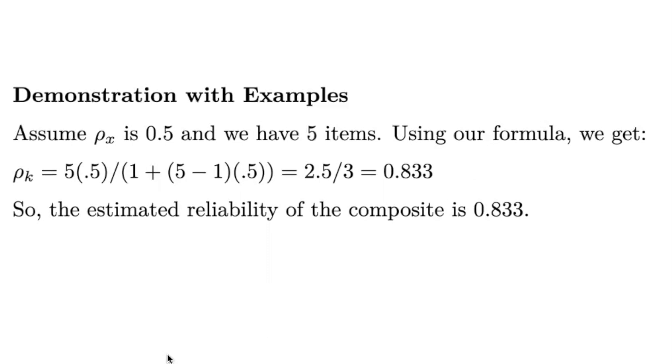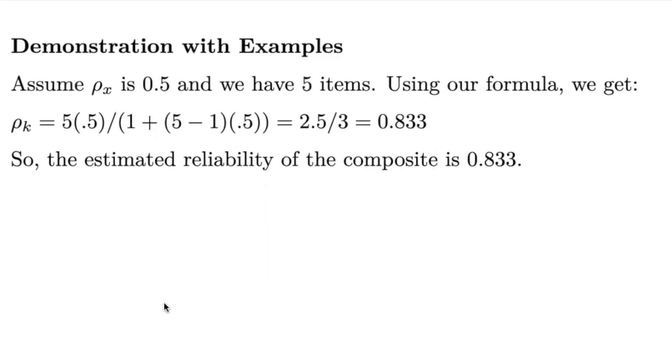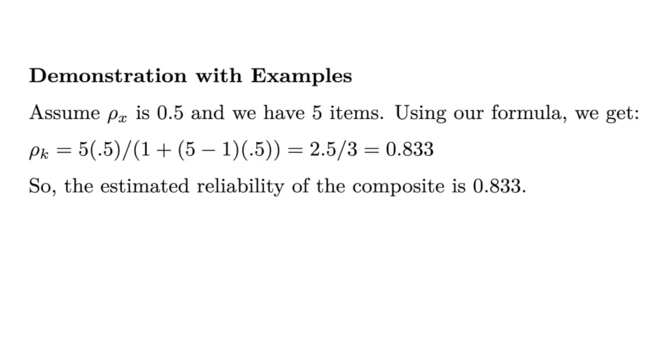When we plug these values into our formula, we arrive at a composite reliability of 0.833. Even though each individual item was only 50% reliable, our composite measure has a reliability of 83.3%. This means combining imperfect measures can result in a more reliable overall measure.